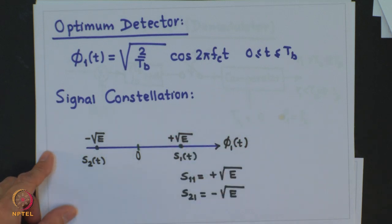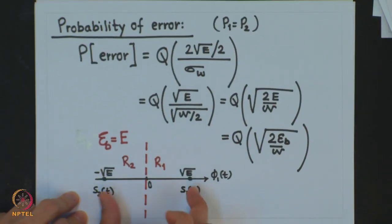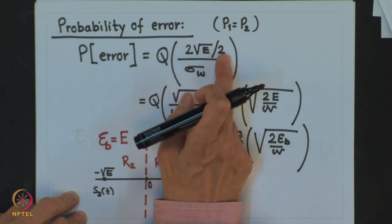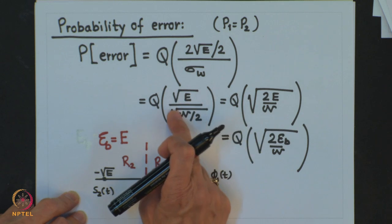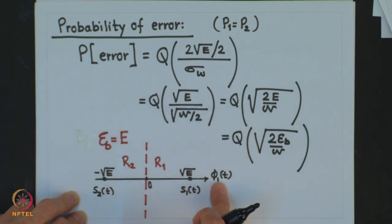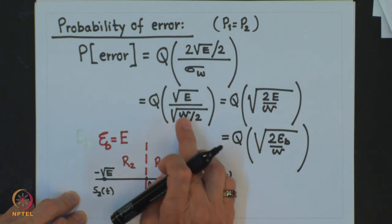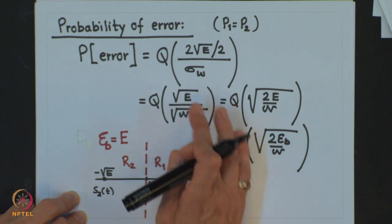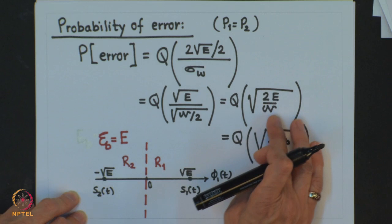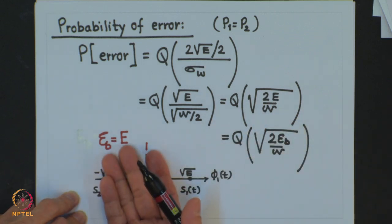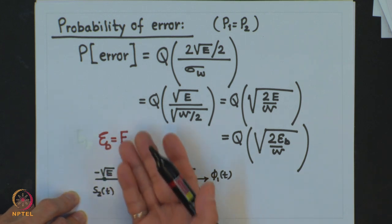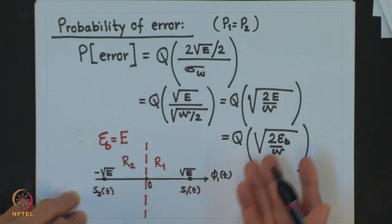The probability of error equals the conditional error probability of any one signal. Looking at the signal constellation, the distance is 2·root(E). The probability of error is Q of (2·root(E)/2) divided by the standard deviation of the noise, where the noise is projected onto the orthonormal axis phi_1, so the variance remains N/2, and the standard deviation is root(N/2). The bit energy turns out to be the same as the energy E of each signal S1(T) and S2(T), since they are equiprobable.